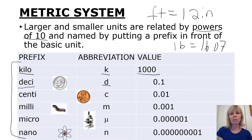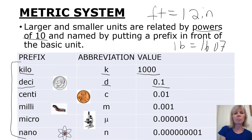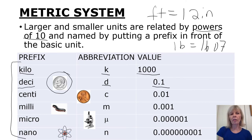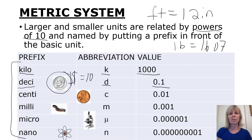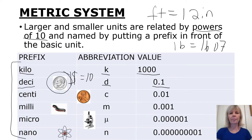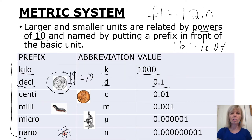Deci, abbreviated with a little d, is one-tenth of your basic unit. I also put a picture of a dime here — if you think about a dollar, a dollar contains 10 dimes, and one-tenth of your dollar would be a dime. So that might help: D in dime, D in deci, to help you remember that deci means one-tenth of your basic unit.